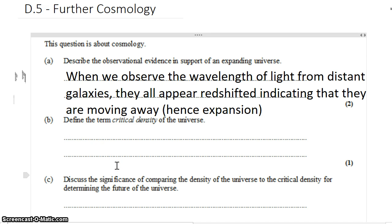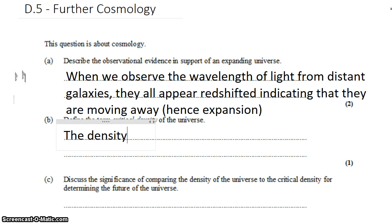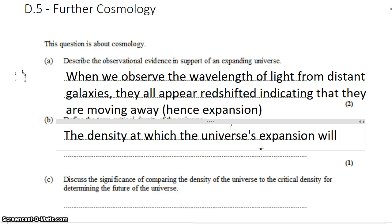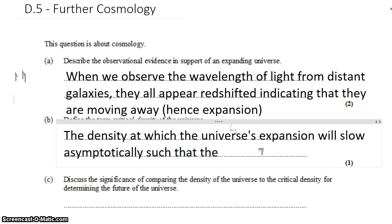To define the term critical density of the universe, this is the density at which the universe's expansion will slow asymptotically, such that the universe approaches a fixed maximum size.